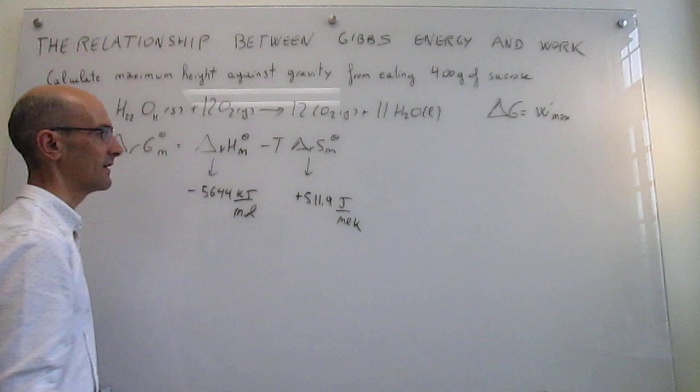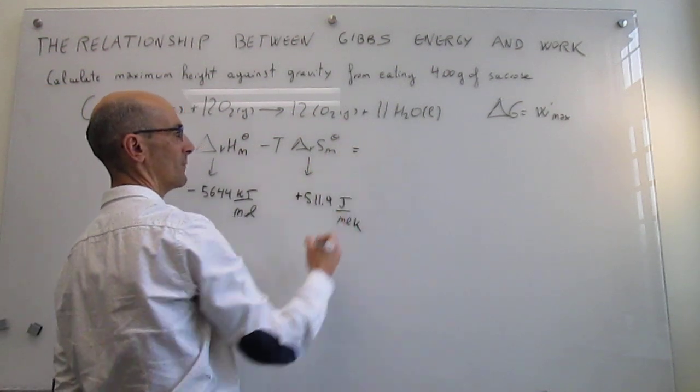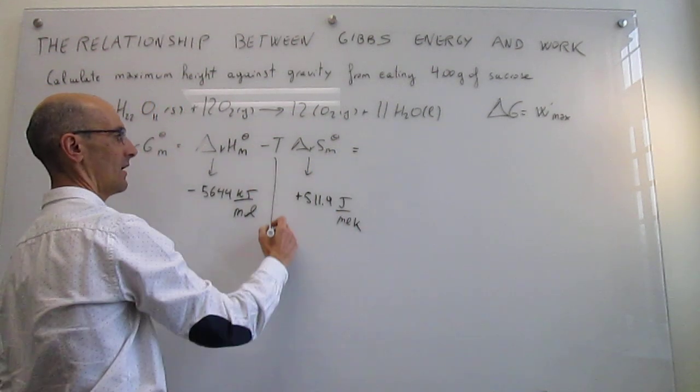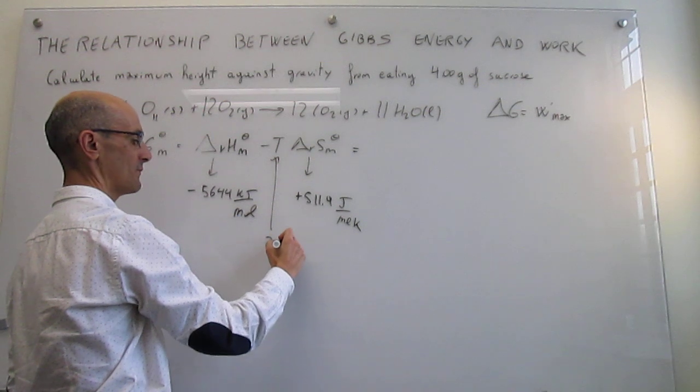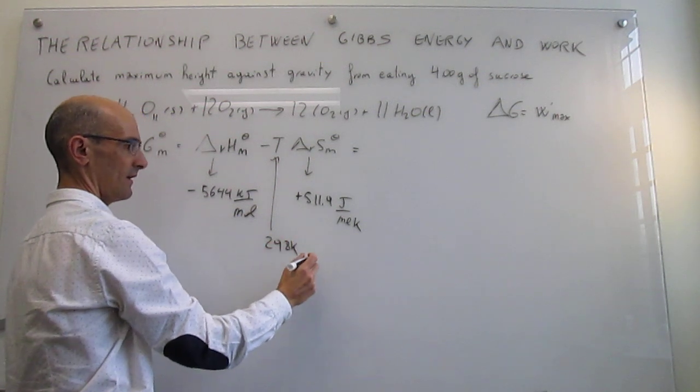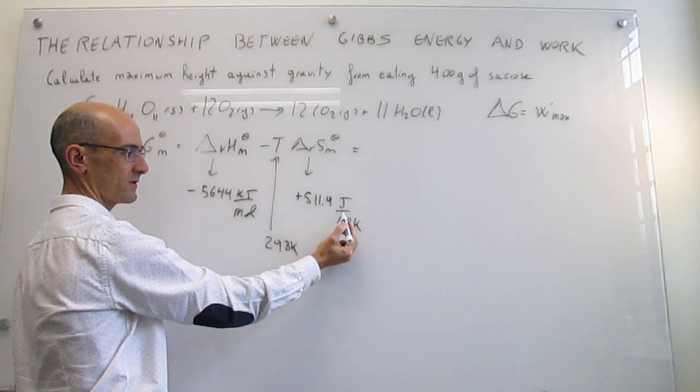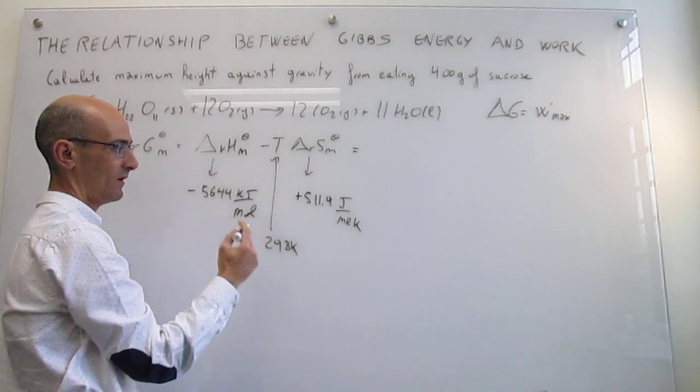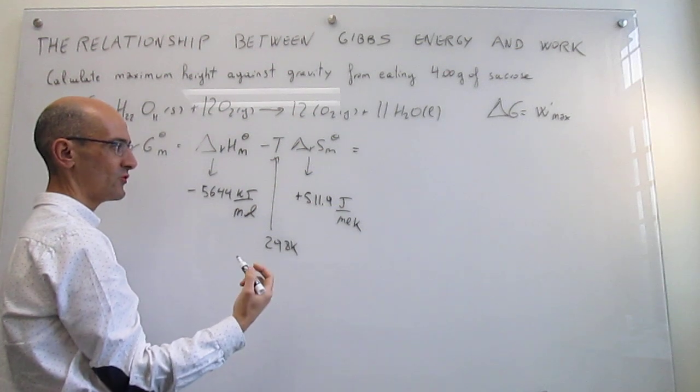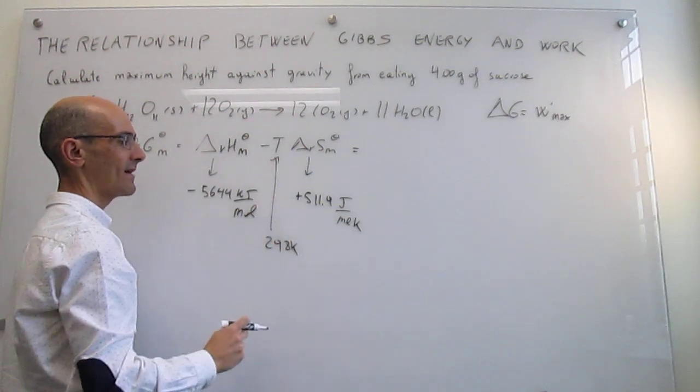What we have to do is get these values together and obtain what we want here. The temperature is 298 Kelvin, and the only issue is to recognize that here you have joules per mole Kelvin, and here you have kilojoules per mole.